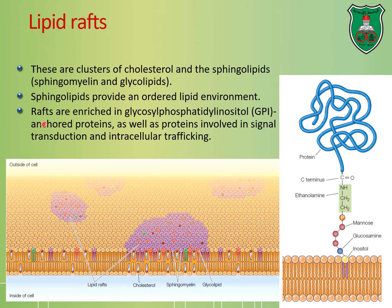Lipid rafts are also rich in glycosylphosphatidylinositol (GPI)-anchored proteins, which consist of a fatty acid, sugar molecules, ethanolamine, and an attached protein molecule. This is one mechanism by which proteins can be attached to plasma membranes. Lipid rafts are also rich in signaling molecules, which are clustered together, making it easier for signaling molecules to find each other, collide, and initiate signaling.